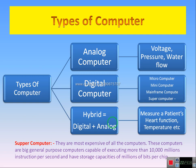Type of a computer. What are the computers? Micro computer, mini, mainframe computer, and super computers — this is a type of digital computer. The type of digital computer is a type of computer. Hybrid computer is a type of computer.